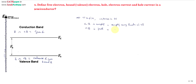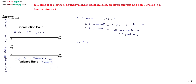The valence band is full, meaning all energy levels are occupied by electrons. As we increase temperature, some electrons get excited from the valence band and reach the conduction band if sufficient energy is applied. Let's assume one electron got sufficient energy to move from valence band to conduction band.